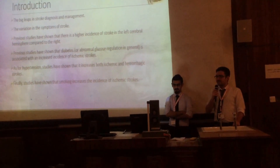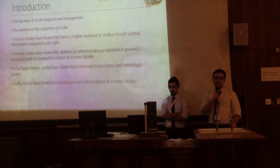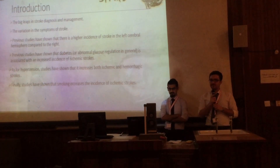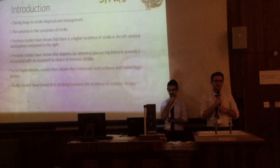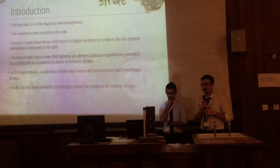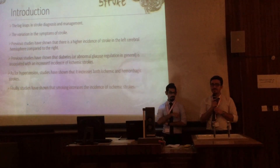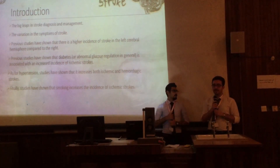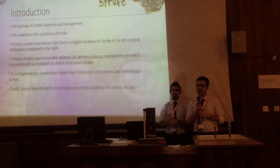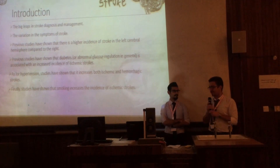Previous studies have shown that diabetes and smoking are more associated with ischemic strokes, while hypertension is more associated with both hemorrhagic and ischemic strokes. There is not a single study in the medical literature that mentions anything about the site of stroke compared to these factors.